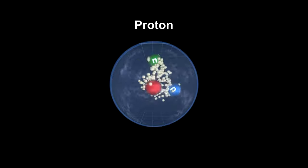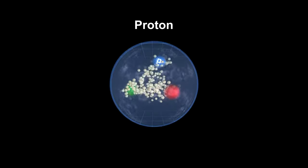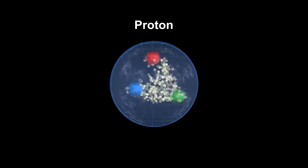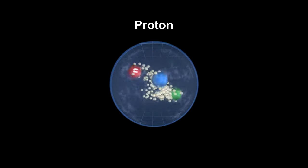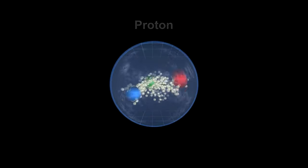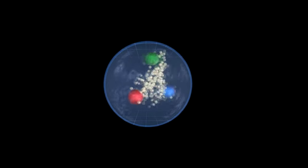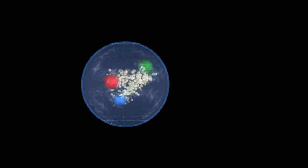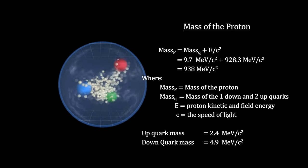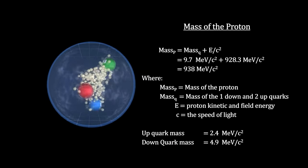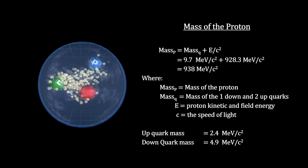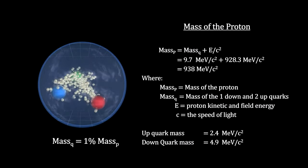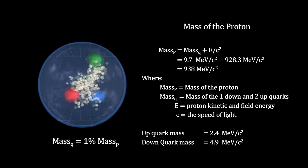The proton is key to helping us understand the origin of mass. The only stable elementary particles in the proton with mass are the two up quarks and one down quark. Their tiny masses constitute only 1% of the mass of the proton.